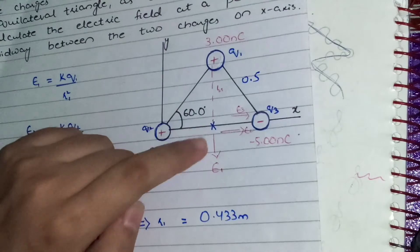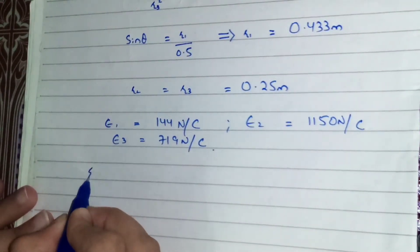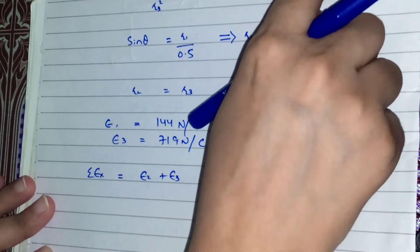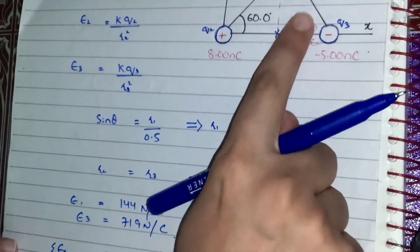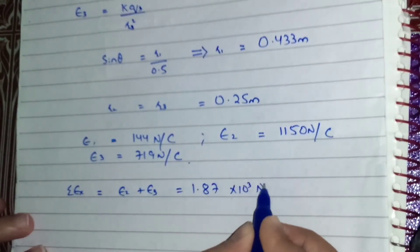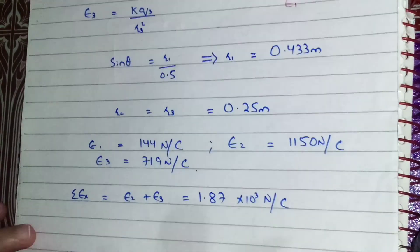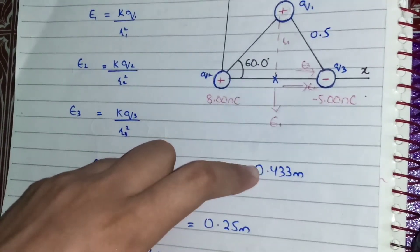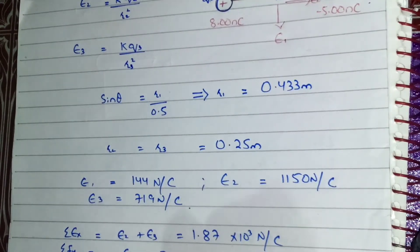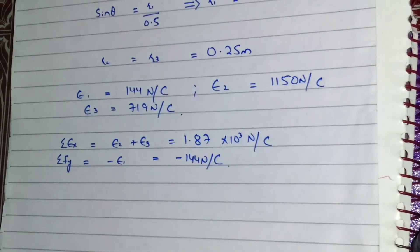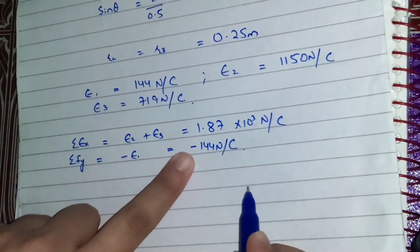We have two fields in the x-direction and one field in the y-direction. The sum of Ex — the forces in the x-direction — is E2 plus E3, because these two forces are toward the positive x-axis. That gives 1.87×10³ N/C. For the y-direction, we have only E1, which is toward the negative y-axis, so Ey = −144 N/C.